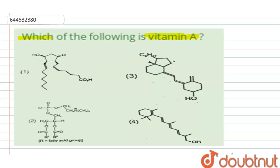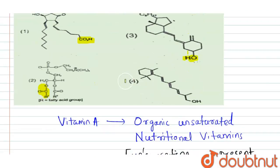Now let's check the options. In option one, there is a COOH group — in Vitamin A there is no COOH group. Similarly, in option two, there is an ester group which is not in Vitamin A. In option three, an OH group is attached to the ring, so Vitamin A does not contain this structure. But in option four, we get the structure of Vitamin A — this is our answer.